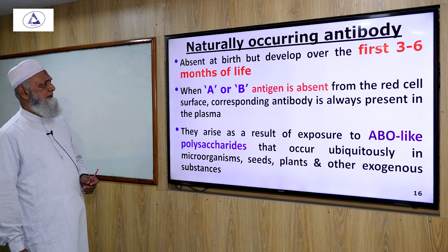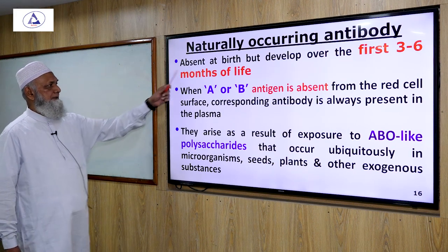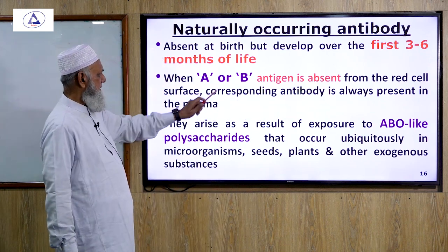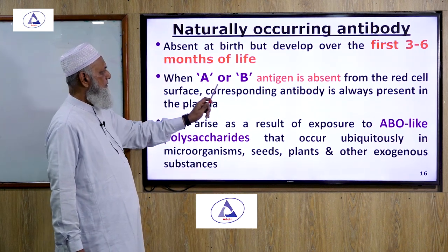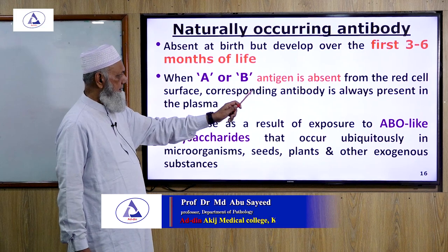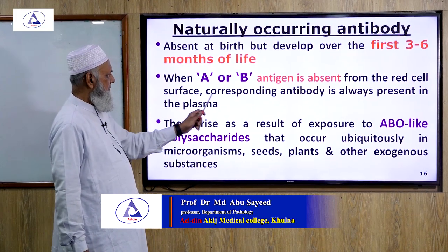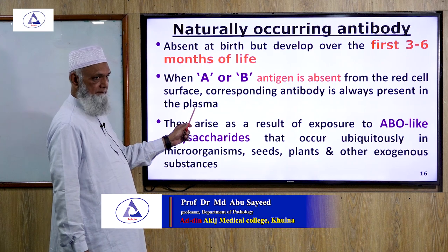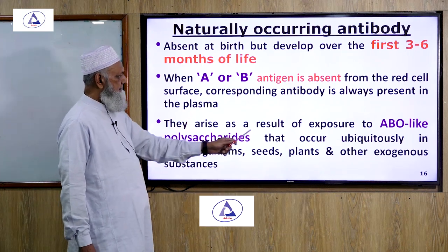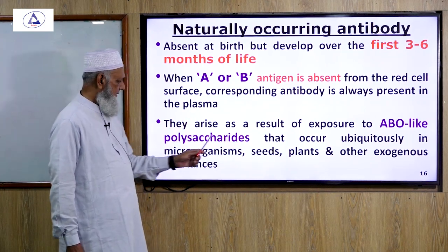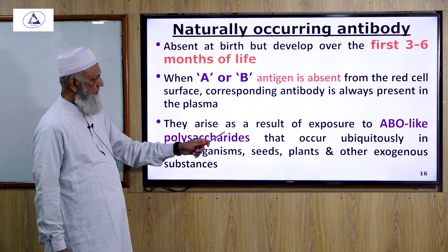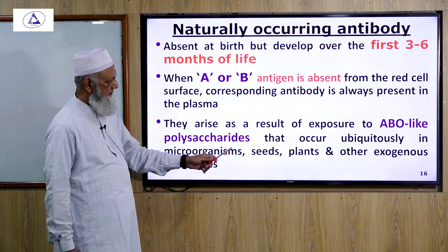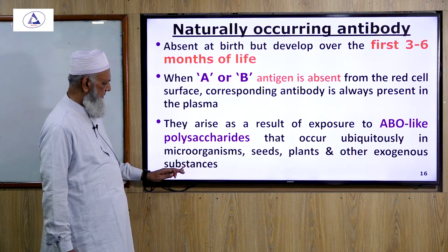Naturally occurring antibodies are absent at birth and develop over the first 3 to 6 months of life. When A or B antigen is absent from the red cell surface, the corresponding antibody is always present in the plasma. They arise as a result of exposure to ABO-like polysaccharides that occur ubiquitously in microorganisms, seeds, plants, and other exogenous substances.